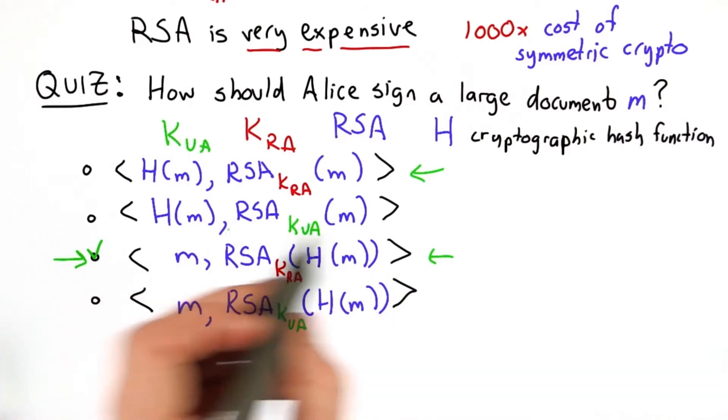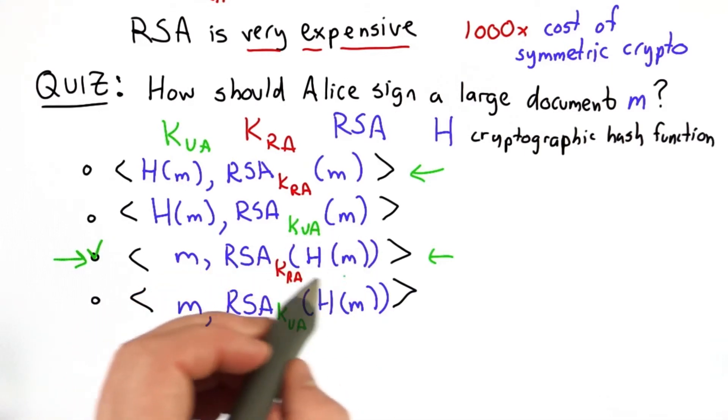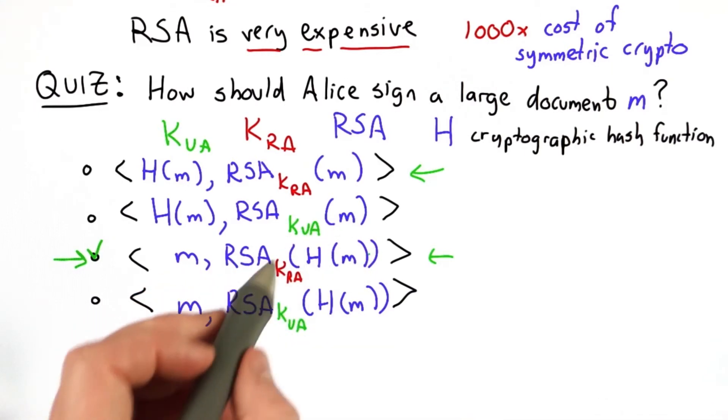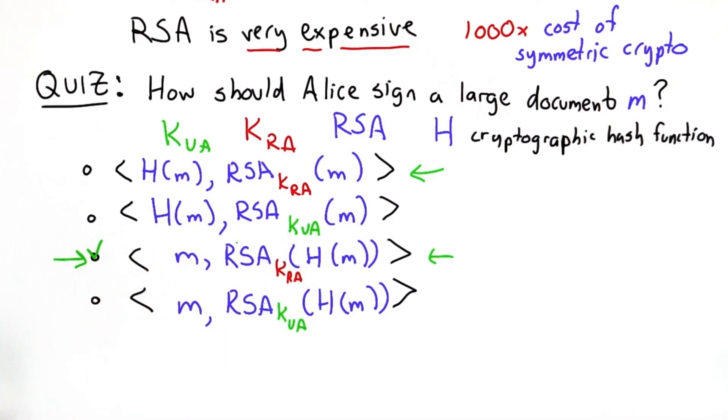Lots of protocols are based on this kind of solution, where we use RSA to encrypt something small, which could be a hash value or an encryption key, and then we use that with symmetric crypto for the rest of the message.